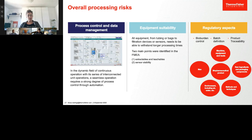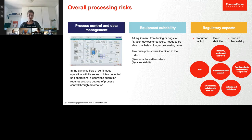After the seed train, the monoclonal antibody production process relies on a single-use bioreactor for high cell density cultivation using a cell retention device. In the FMEA, we identified various general processing risks applying to several processing steps. These overall risks were divided into process control and data management — such as defining the automation strategy — equipment suitability with the two main points of leachables and extractables and sensor stability, and regulatory aspects such as bioburden control, batch definition, and product traceability.